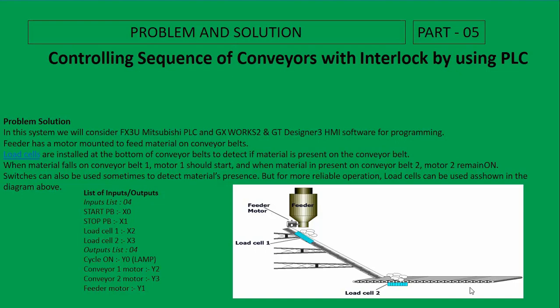Here are the conditions: a feeder has a motor mounted to feed material onto the conveyor belt. This is the feeder motor and this is the hopper. Load cells are installed at the bottom of the conveyor belt to detect if material is present. There are two load cells: load cell 1 and load cell 2.